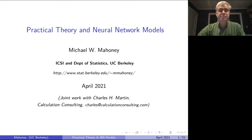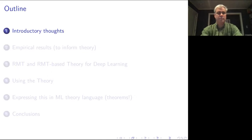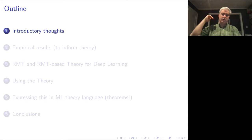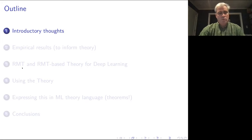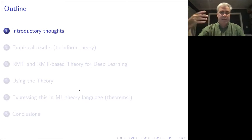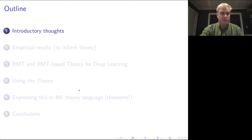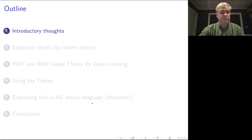So some introductory thoughts: we're going to follow the scientific demo. We're not going to start with general statistical learning principles — we're going to go look at the world and get empirical results to inform the theory. We'll use techniques from statistical mechanics, random matrix theory, and heavy-tailed random matrix theory to formulate a phenomenological theory. We have unpublished work justifying this in terms of variants of the student-teacher model, but that's not mature enough to talk about today. An example of how you use the theory is predicting trends in the quality of state-of-the-art models without access to any training or testing data.